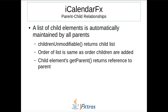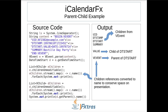iCalendarFX maintains parent-child relationships. A list of child elements is automatically maintained by parents when children are added. The list is accessed by the children-unmodifiable method. The order of the children in the list matches the order in which they were added to the parent. Also, children have a getParent method that returns a reference to its parent. Here is an example showing parent-child connections. I create a vEvent by parsing iCalendar content text, get its DateTimeStart property, get the list of the vEvent and DateTimeStart property's children, and finally get the parent of the DateTimeStart property. The output shows the four properties of the vEvent and the one parameter of the DateTimeStart property as their respective children. You can see the DateTimeStart property's parent is the vEvent.